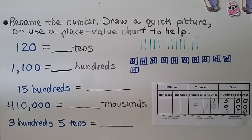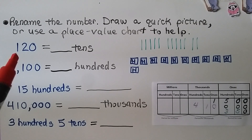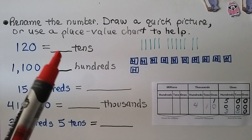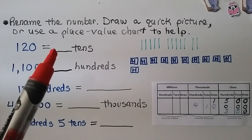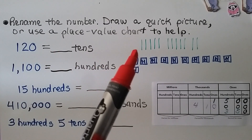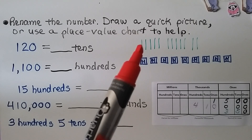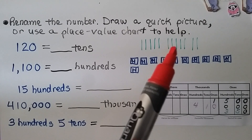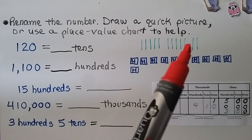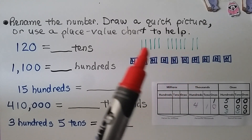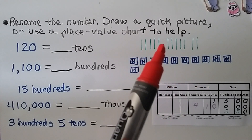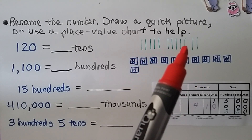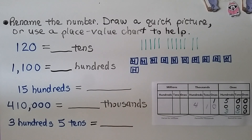For our practice problem, we need to rename 120. We need to know how many tens that would be. We can draw longs of ten and count by tens: 10, 20, 30 ... up to 120. Counting all the longs, we have 5 and another 5 — that's 10 — then 11, 12 tens. So 120 equals 12 tens.